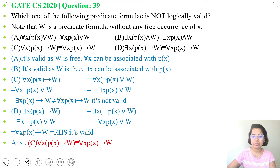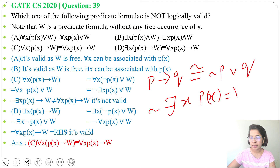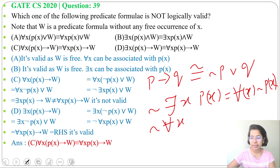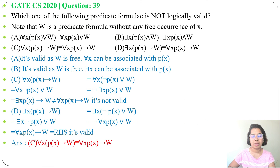For solving this question we use the logical equivalences: P implies Q is logically equivalent to negation P or Q; the negation of there exists X P(X) is equivalent to for all X negation of P(X); and the negation of for all X P(X) is logically equivalent to there exists X negation of P(X). These two are De Morgan's laws for quantifiers. I already discussed predicates and quantifiers — just go through the lecture.